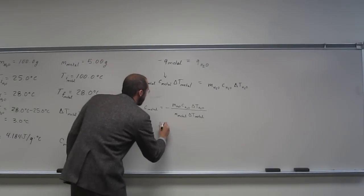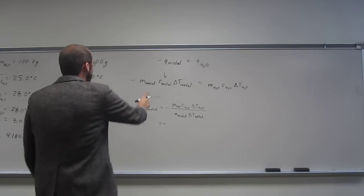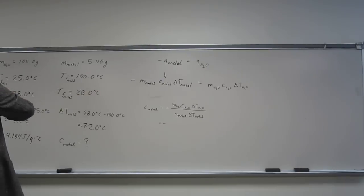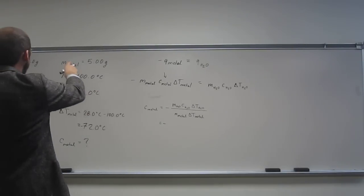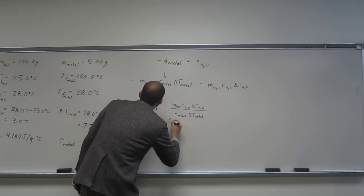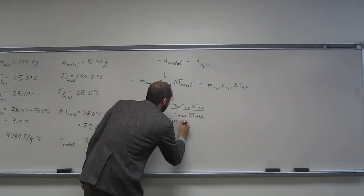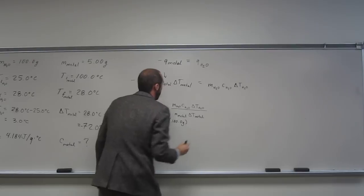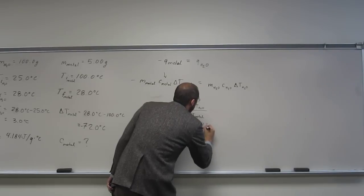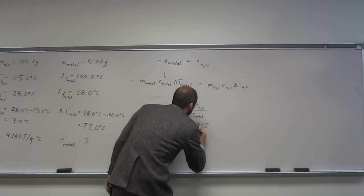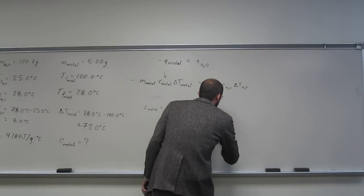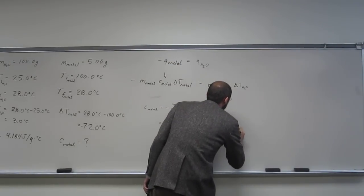So let's just go ahead and do this. Do we have all this stuff? We have the mass of the water, the C of the water, delta T of the water, mass of the metal, and delta T of the metal. So we should be able to do this. Just plug and chug. So 100.0 grams, 4.184 joules per 1 gram degree C times 3.0 degree C.